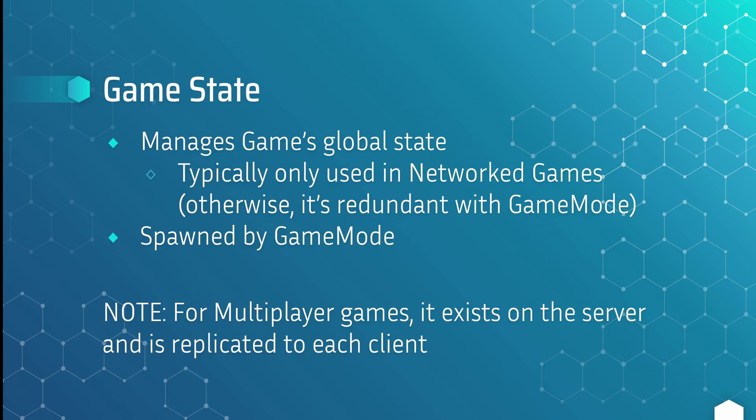The final class, again only really necessary for multiplayer games, is the Game State. It manages the game's global state and is typically only used for network games, as otherwise it's redundant with the game mode. It is spawned by the game mode, and in a multiplayer game it exists on the server and is then replicated to each client. This allows each client to track certain data without having to constantly reference the game mode.